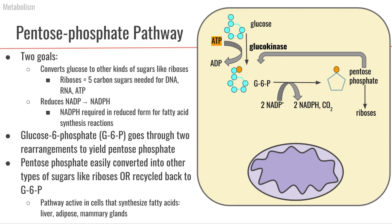Another reason a cell may want to run the pentose phosphate pathway is to reduce NADP to NADPH. NADPH is required in the process of synthesizing fatty acids, where we take acetyl-CoA's and start adding them together to build a fatty acid. That process of lipogenesis requires NADPH, which gets oxidized to NADP in the process. So a cell may run this pathway to reduce NADP back to NADPH so it's ready for lipogenesis.